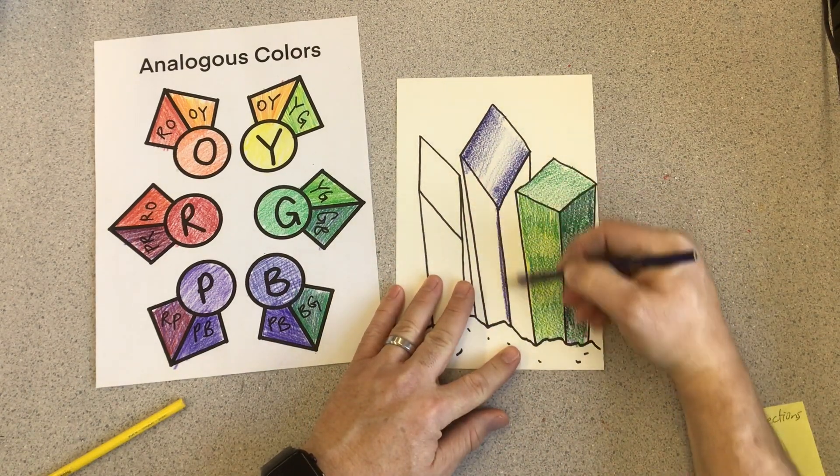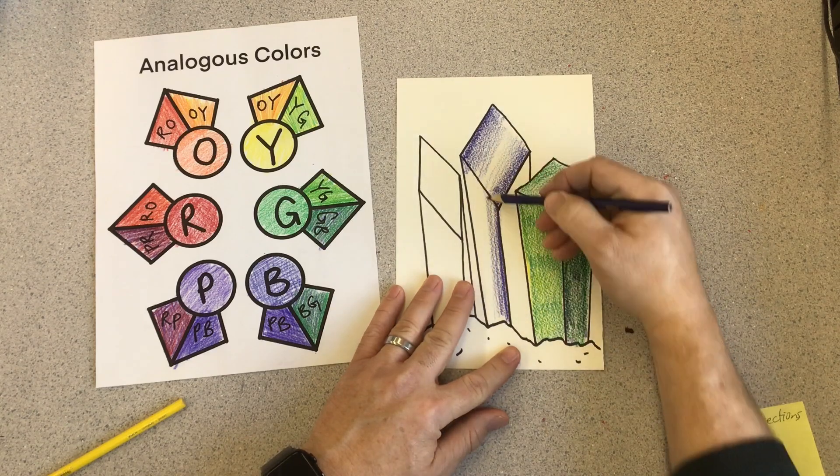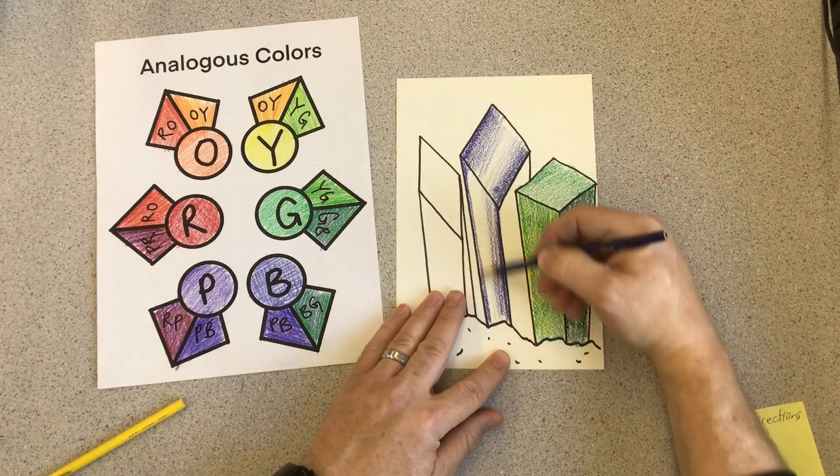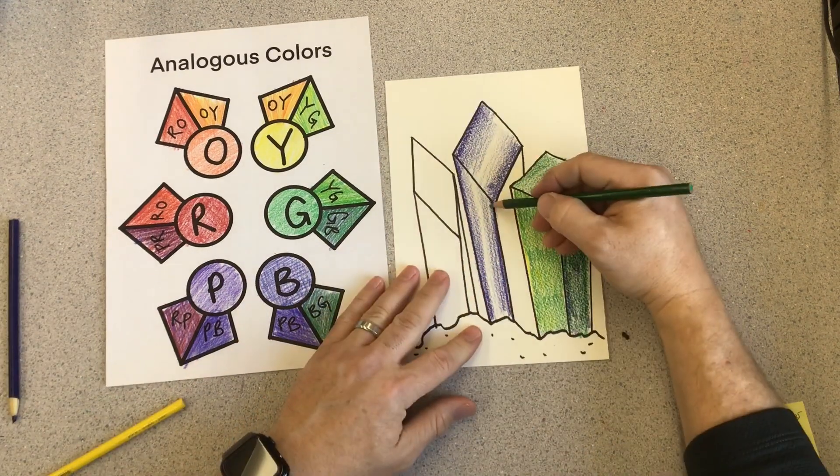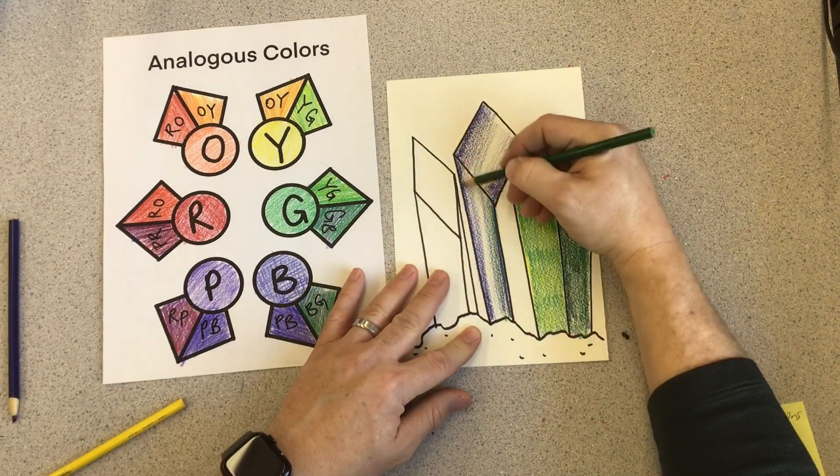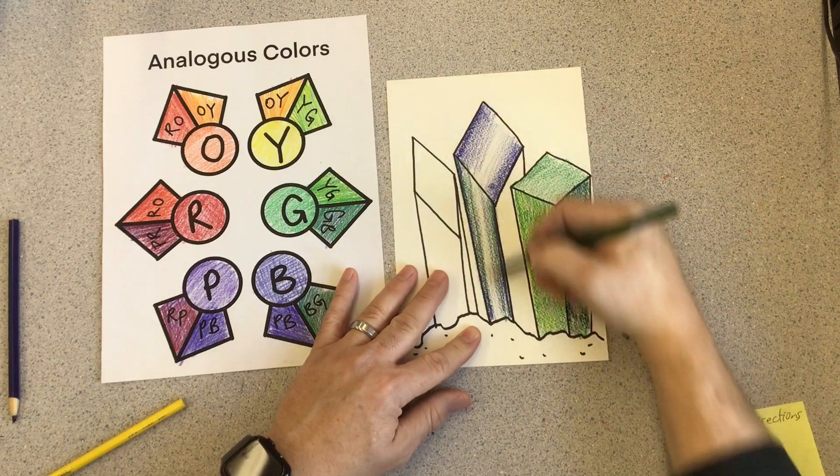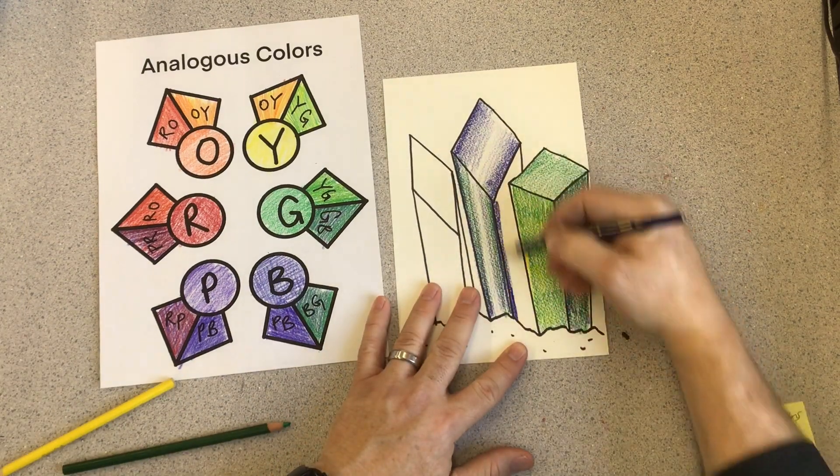Then I can do the same thing on the sides. So I'm going to start off dark on the side, get lighter and lighter. Start on the side, get lighter and lighter. But I still have to use the analogous color, so I'll use green on top. Go back to blue, dark on the side, get lighter and lighter.